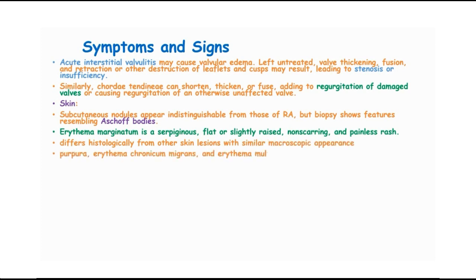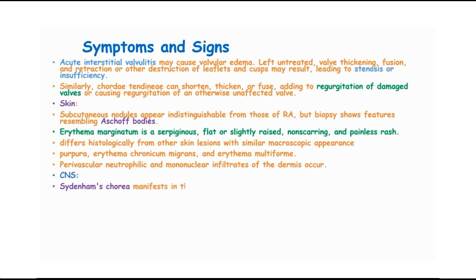We have purpura, erythema chronicum migrans and erythema multiforme. Perivascular neutrophilic and mononuclear infiltrates of the dermis can also occur.